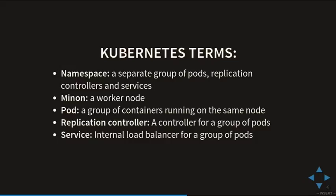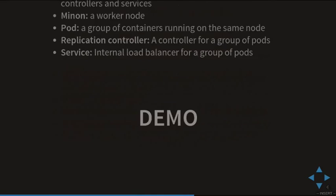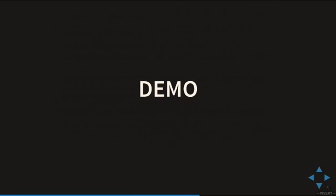A replication controller is a controller for a group of pods where you say you want to deploy these pods with this many replicas. A service is a load balancer for a group of pods running on Kubernetes. Maybe let's make a demo.